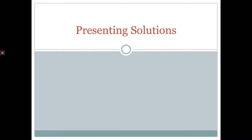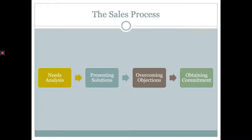Hey everyone, welcome to another week of K&R 440. This week we're going to be moving on to the second stage of the sales process. Last week we highlighted the first stage, which was the needs analysis stage — really just focusing on information gathering from the prospect. And once that stage of analysis is complete, you can then move on to the presenting solution stage. This is a four-stage process we're going to be looking at over the coming weeks.